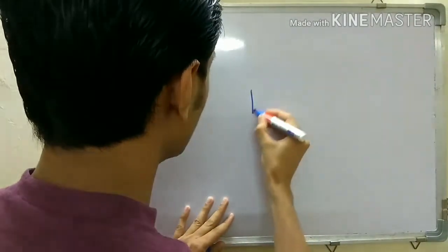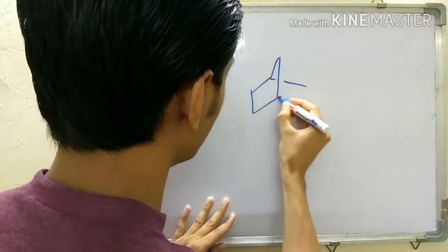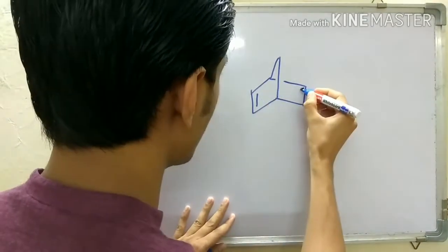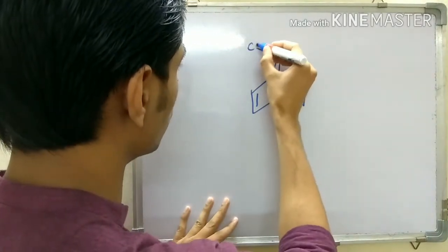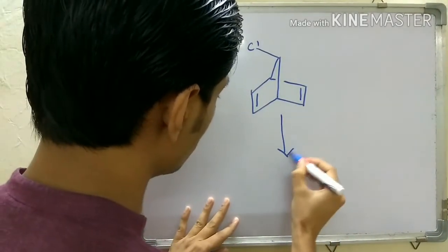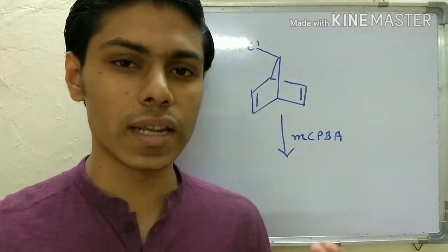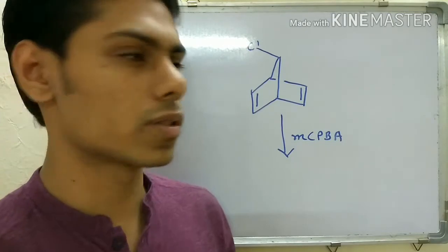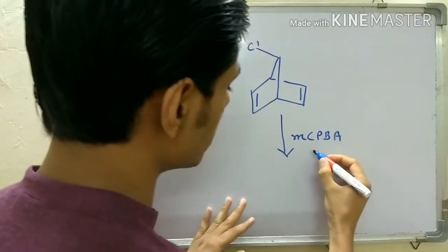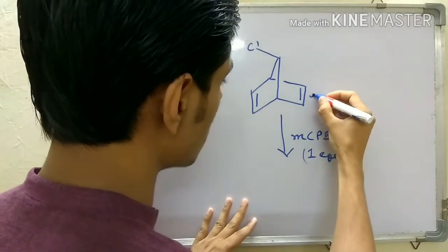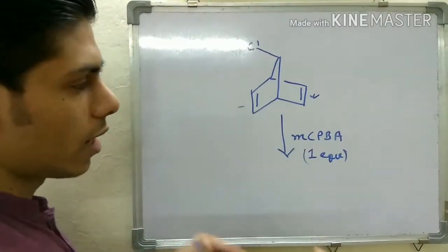While you read this, you will be able to identify how much your concept is built. Before starting the full discussion, I would like to ask you a question. Let's say you are given this bicyclic molecule where both sides have a double bond, but on one side there is a chlorine, and it is reacted with meta-chloroperoxybenzoic acid. When you react MCPBA with any double bond, it is the Prilezhaev reaction and that gives an epoxide. If one equivalent is used, either this double bond can be epoxidized or the other one.